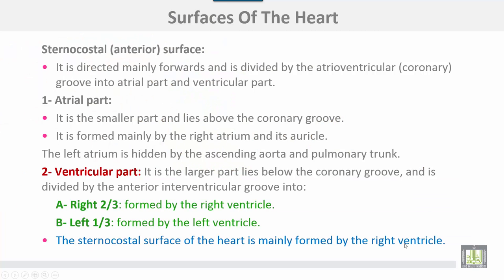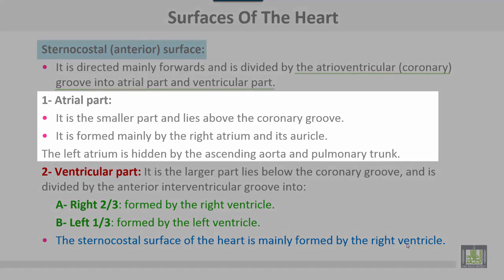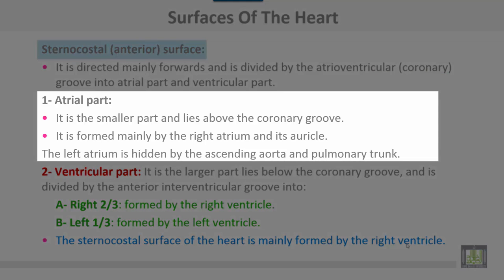The sternocostal surface of the heart, or anterior surface, is directed mainly forwards and is divided by the atrioventricular or coronary groove into an atrial part and a ventricular part. The atrial part is the smaller part and lies above the coronary groove. It is formed mainly by the right atrium and its auricle. The left atrium is hidden by the ascending aorta and the pulmonary trunk.